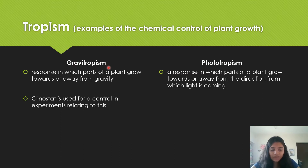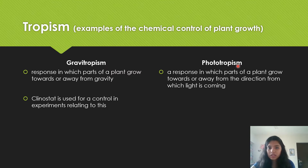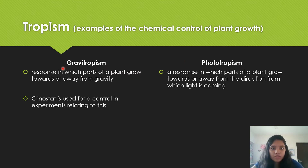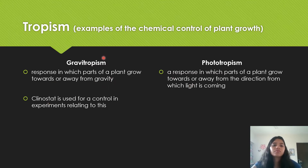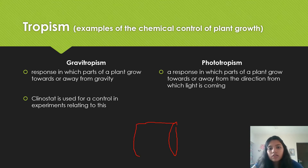Gravitropism is about the direction of gravity, which is always going to be towards the earth, and phototropism is about the direction of light. Gravitropism is a response in which parts of a plant grow towards or away from gravity. So if you have a pot placed sideways, the plant and its roots are going to grow accordingly.